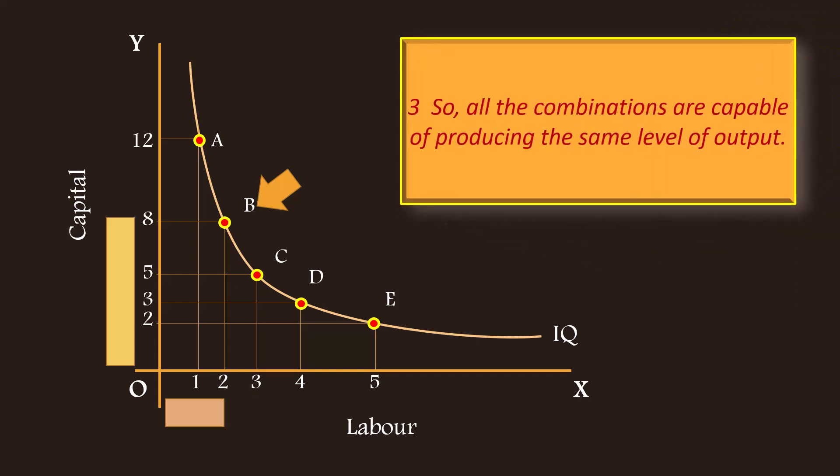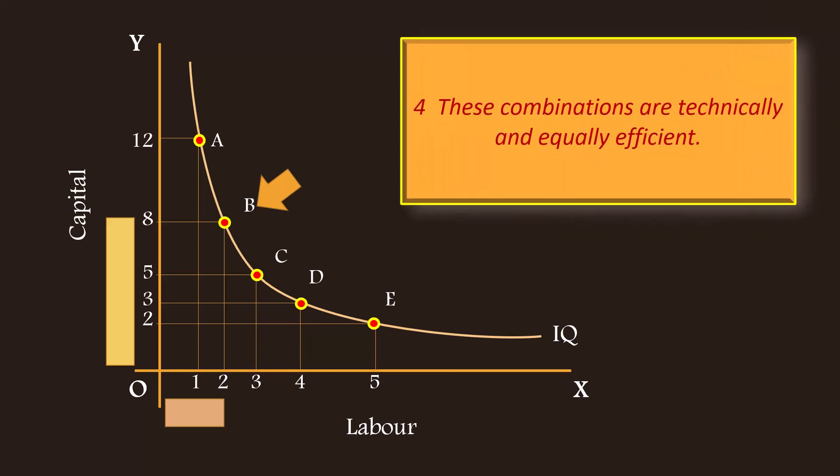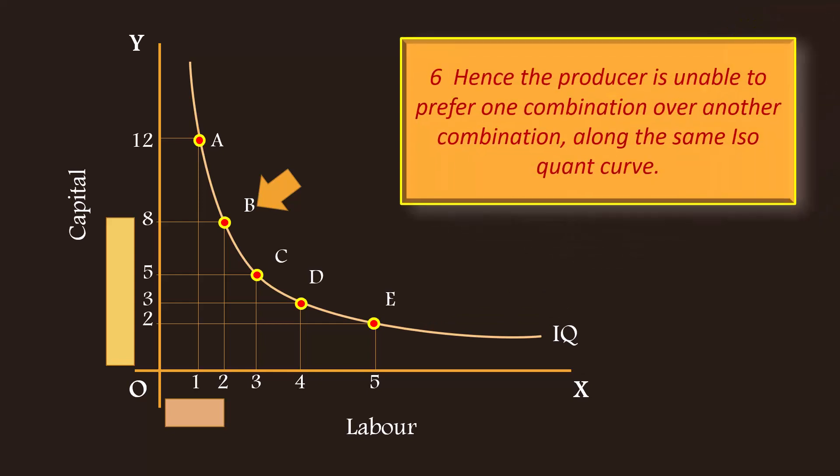Three, so all the combinations are capable of producing the same level of output. Four, these combinations are technically and equally efficient. Five, all the combinations are equally preferable to the producer. Six, hence the producer is unable to prefer one combination over another combination along the same isoquant curve.